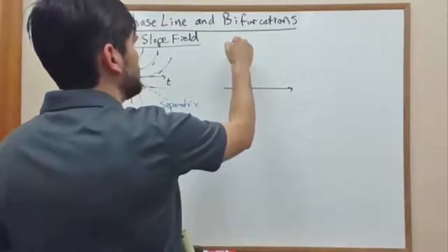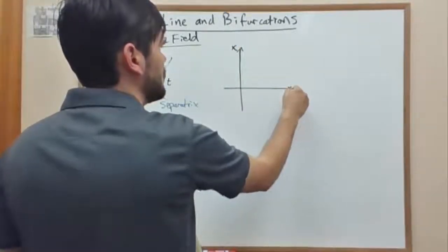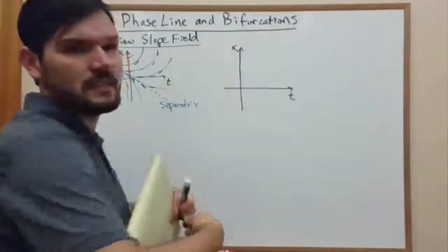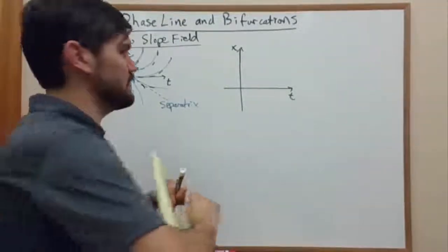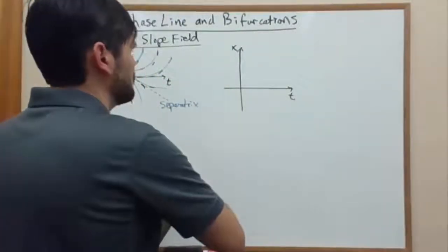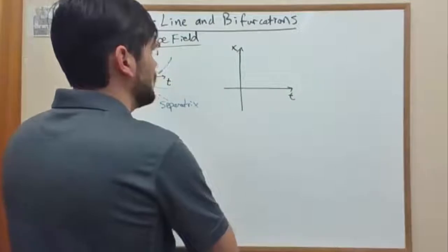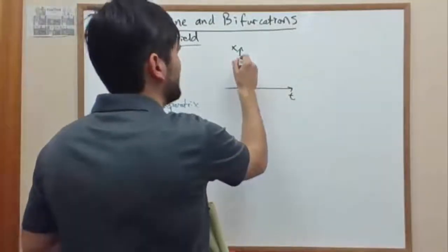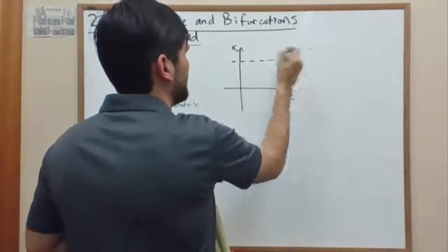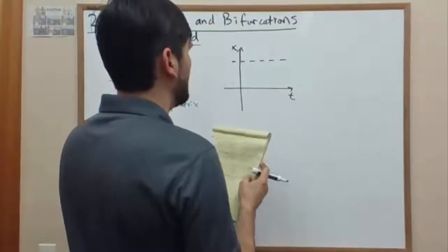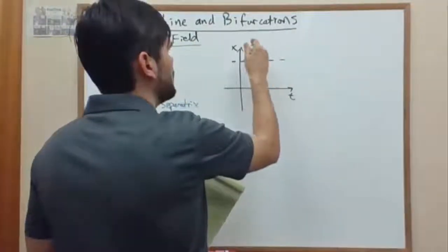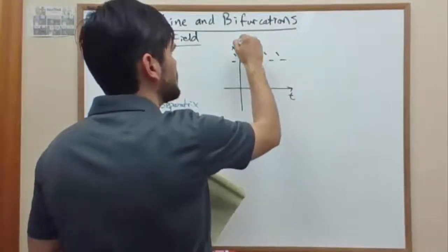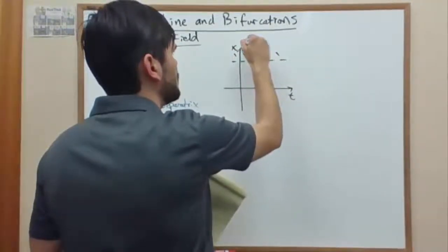Another, or a simpler separatrix, is when the curve that's separating the behaviors is a horizontal constant value. So for example, we have something like that. And then perhaps above it, it's like this, and then a little bit higher.